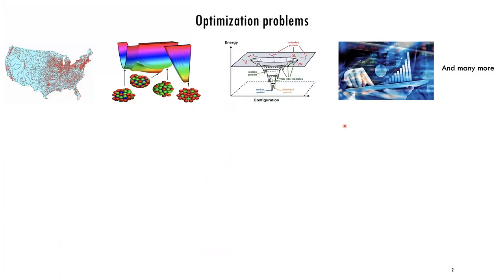We want to solve optimization problems, and optimization problems are ubiquitous in different areas: scheduling, science, industry, finance. Here I gave a couple of examples — the traveling salesman problem, where we want to know the shortest path for a businessman traveling to a number of cities; a problem in quantum chemistry where you want to know the minimum configuration of atoms interacting with some potential; protein folding, where you want to know the native state of a protein; and portfolio optimization, where you want to know the best way to invest assets in your portfolio.